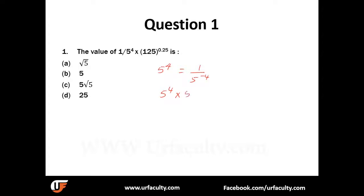The next concept: if there are two numbers, five to the power of four multiplied by five to the power of eight, that is equal to five to the power of twelve — you just add the powers. Similarly, five to the power of eight divided by five to the power of four is equal to five to the power of eight minus four. These are the basic concepts you need to know to solve most problems in surds and indices.